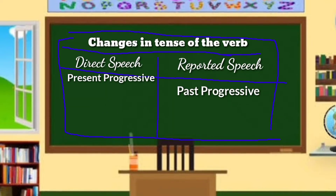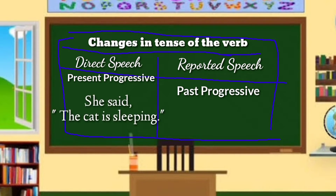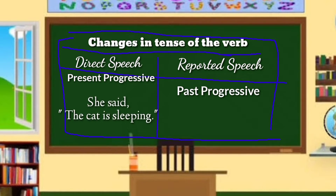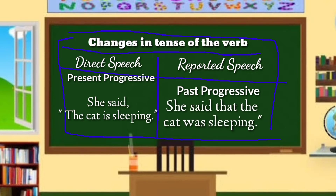Present progressive becomes past progressive. For example — DS: She said, 'The cat is sleeping.' RS: She said that the cat was sleeping. In direct speech, the verb is in present progressive tense. In reported speech, the verb becomes 'was sleeping,' which is in its past progressive.